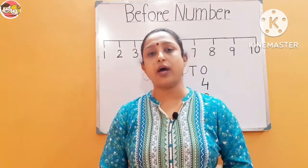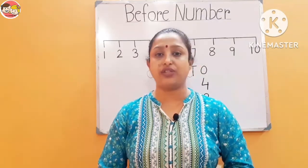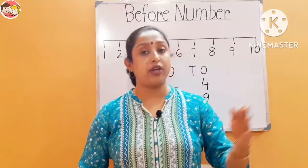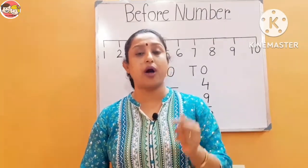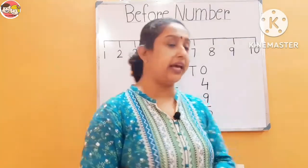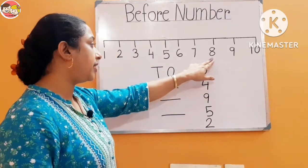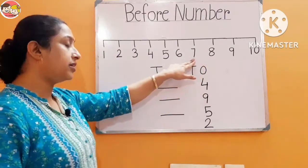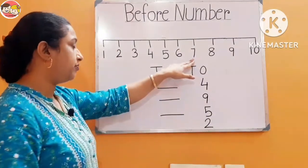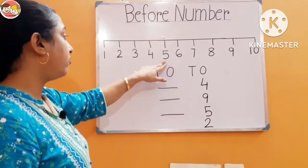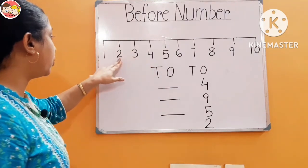Now, before number. Before number and backward counting are closely related. Backward counting means reverse counting — counting by removing 1 every time. Like: 10, 9, 8, 7 — children observe very carefully, here we are moving backward — then 6, 5, 4, 3, 2, 1.